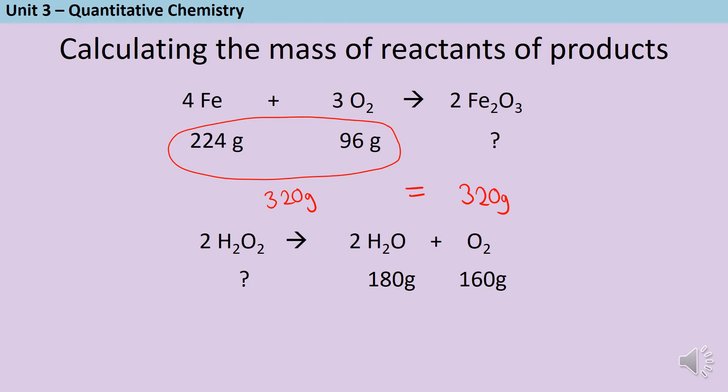Then for this second example, I've got 180 grams of water and 160 grams of oxygen. And if I add those together, I get a total mass of 340 grams. So that means I must start with 340 grams of hydrogen peroxide.